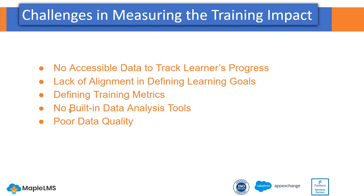This is also one of the most common challenges we see with a lot of organizations. And lastly, and most importantly, data quality matters. Many times your system may have data, but is it valuable data? With most systems, you may see poor data quality — containing duplicate records or maybe overridden data. Basically, any data that doesn't make sense is essentially poor data. These are some of the challenges that come across in measuring training impact.